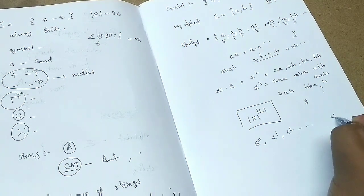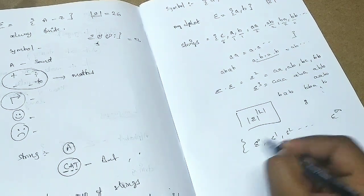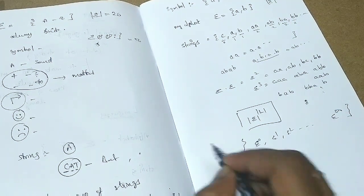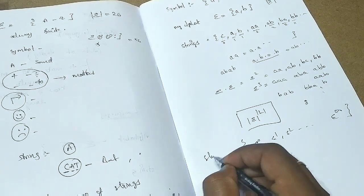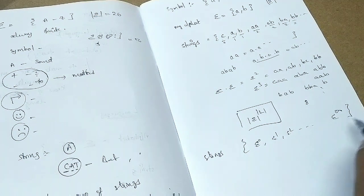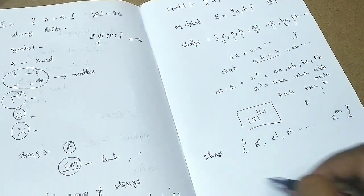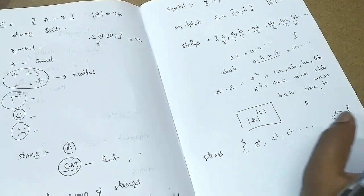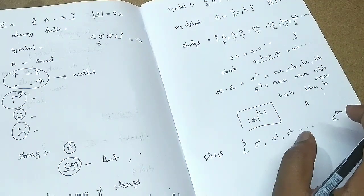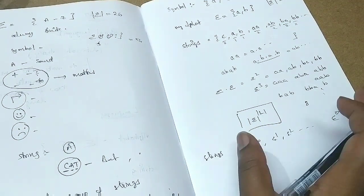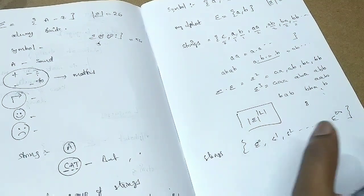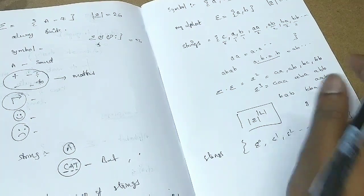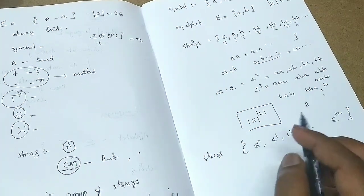These are the strings generated using sigma. If you want to use the full language, this is how it works: we take some of the strings which share a common rule.